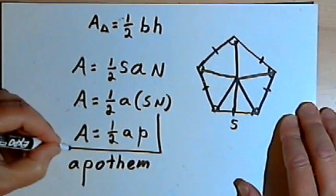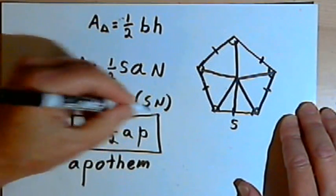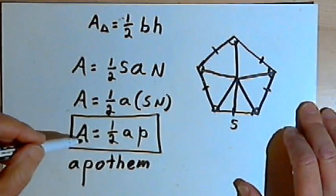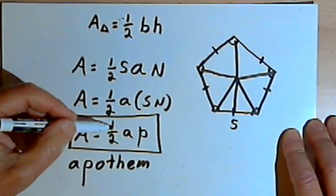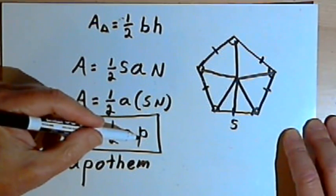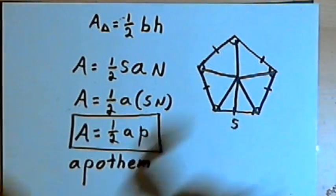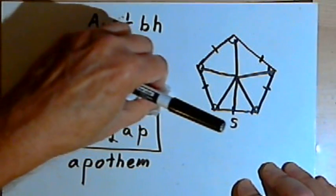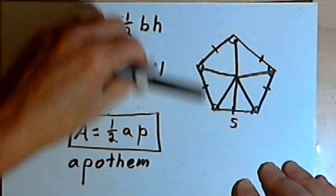So the standard formula that you're going to see for the area of a regular polygon is going to be that the area is one-half times A times P. Okay, let's plug some actual numbers into this pentagon and see if we can find an area.